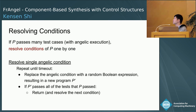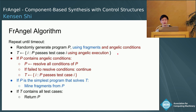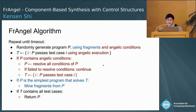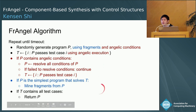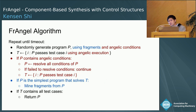This finally brings us to the Frangel algorithm. We generate candidate programs using both fragments and angelic conditions, and run programs using angelic execution. Frangel also attempts to resolve all angelic conditions before mining fragments from any program. This strategy of angelic conditions fits with our guiding principle—we can take known partially correct behaviors and wrap them inside control structures, allowing us to find more complex behaviors that are closer to the target.